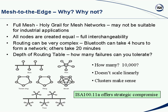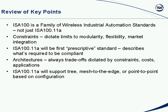The whole point of .11a is that it offers a strategic compromise between the optimum characteristics of full mesh and full point-to-point. Key points so far: ISA 100 will be a family of standards — it's not just .11a; .11a is just the first one. We talked about constraints and where the limits come in to impact modularity, flexibility, and market integration. The .11a will be a prescriptive standard describing what's required to be compliant. Architectures involve tradeoffs on constraints, costs, and applications. .11a will support tree, mesh-to-the-edge, and point-to-point based on initial configuration.